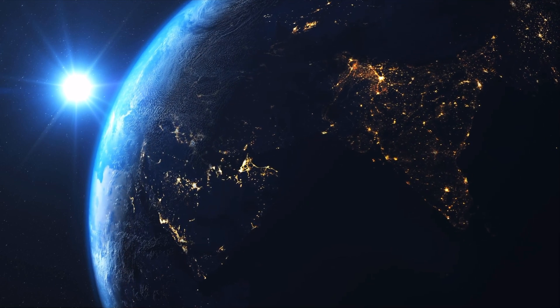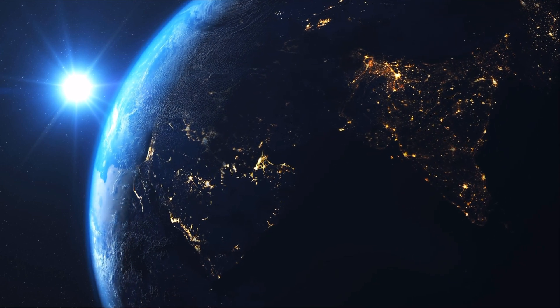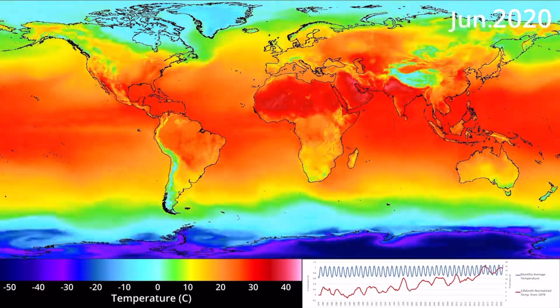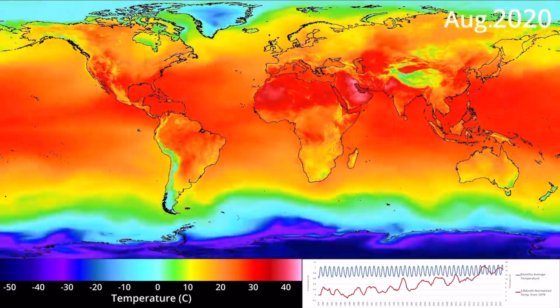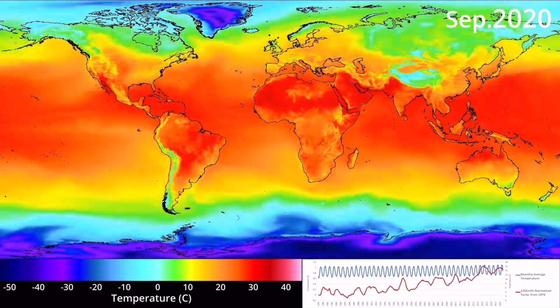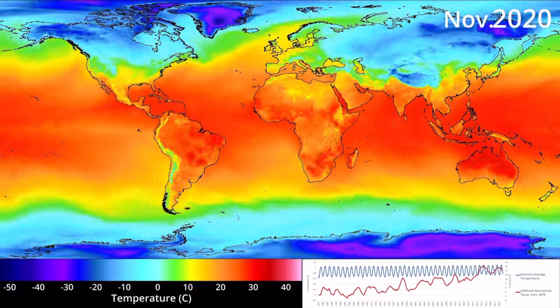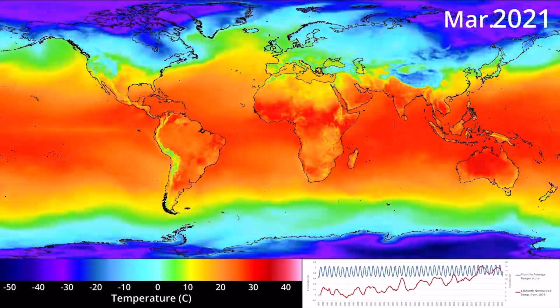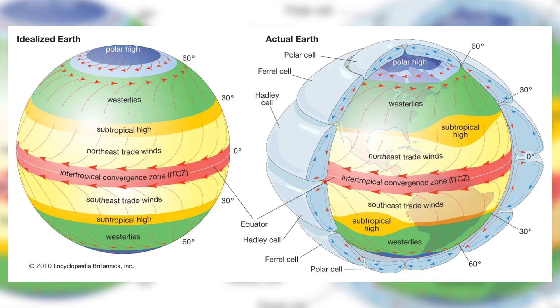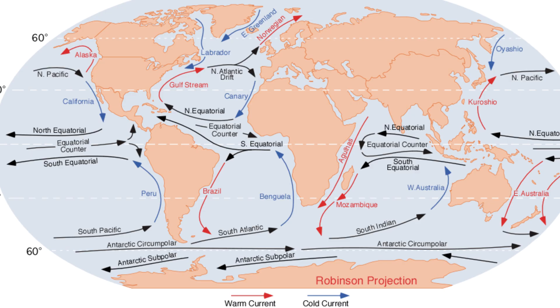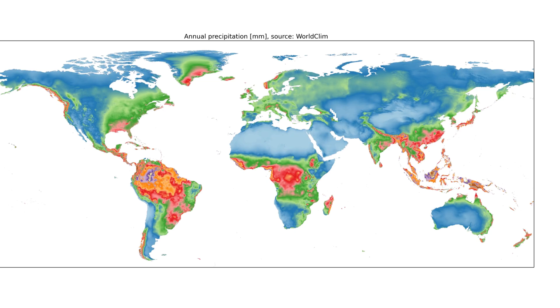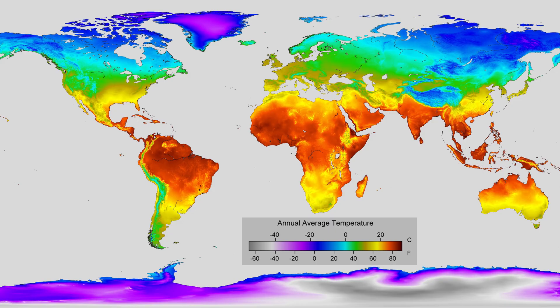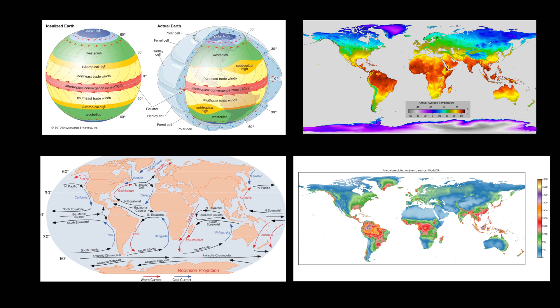How would the world be different if it rotated in the opposite direction? The rotation of Earth is largely responsible for the macro wind and ocean currents we experience, both of which play a massive role in distributing heat and moisture throughout the rest of the planet. In our reality, the wind patterns, ocean currents, annual precipitation, and average temperature all look a certain way — but if the spin of the planet reverses, all of these patterns will shift in some way.